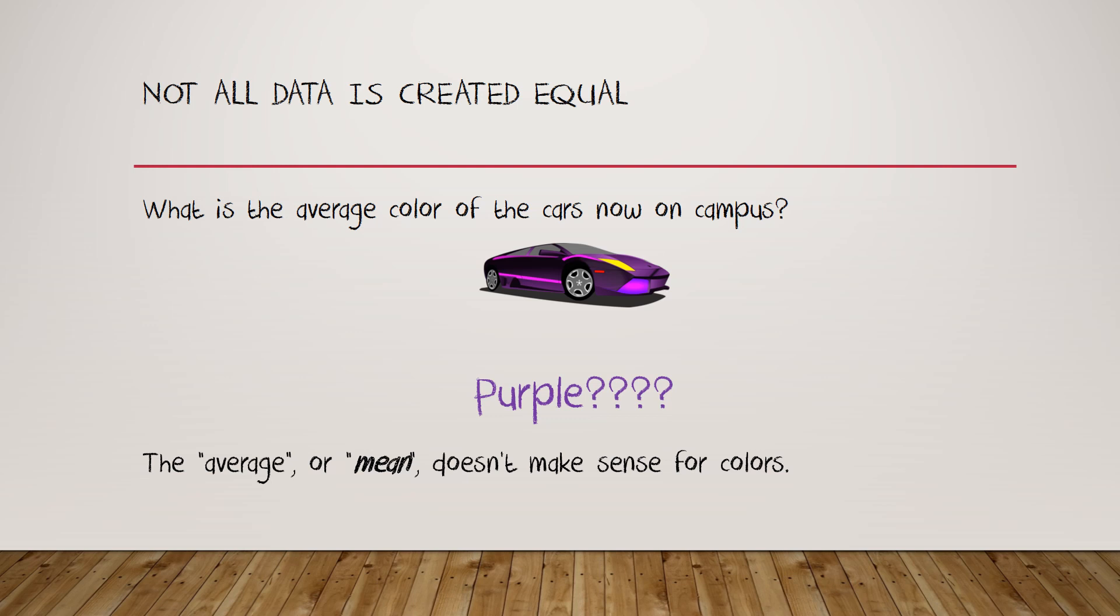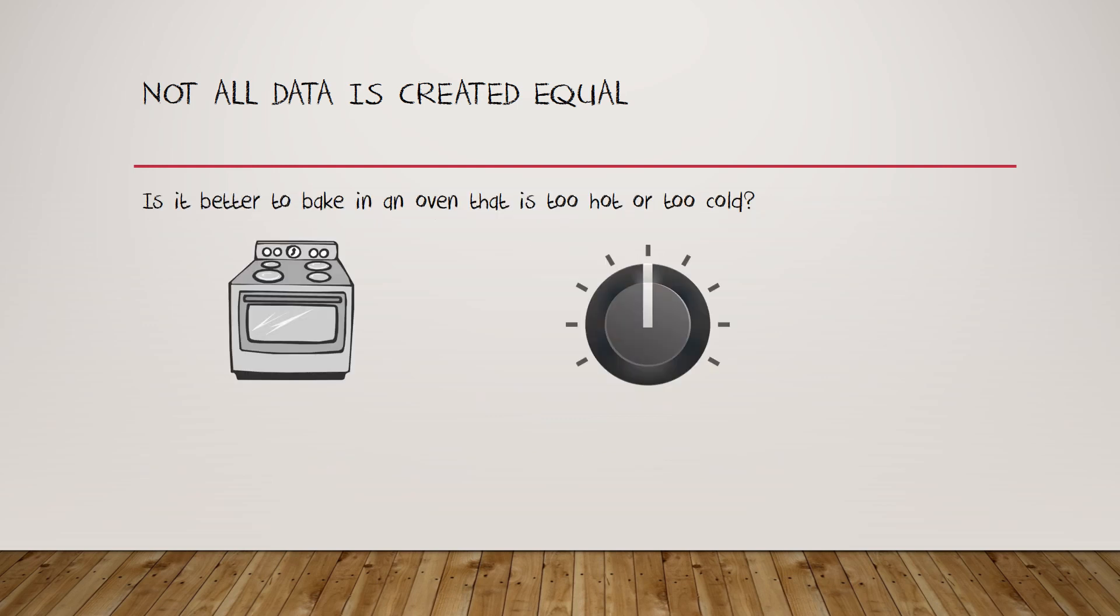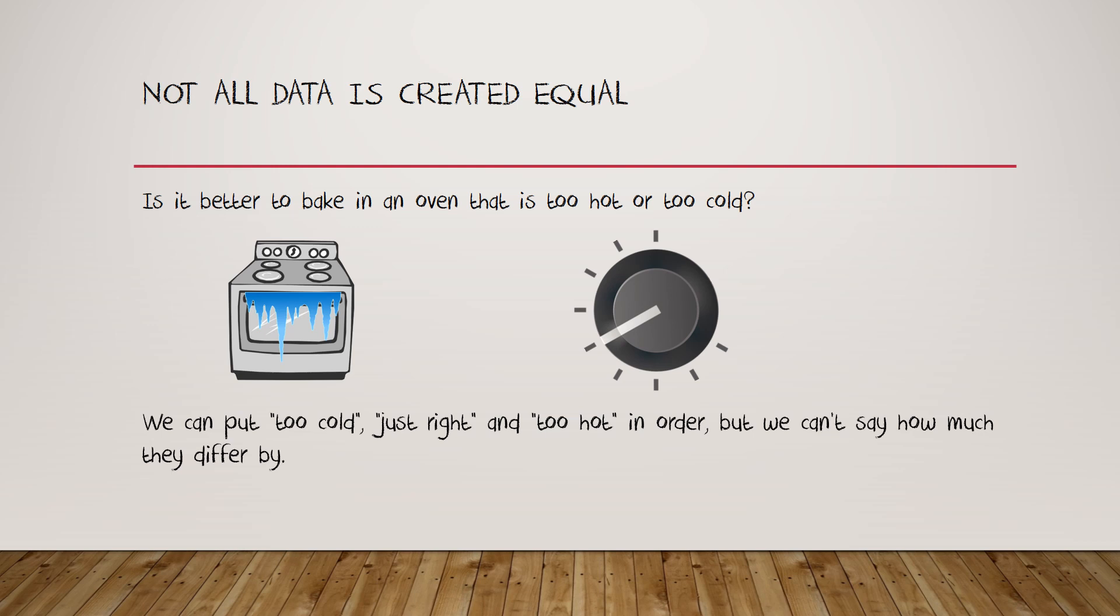We can add a little bit more structure to this kind of data by requiring that the various categories fall in some sort of natural order. For example, is it better to bake in an oven that's too hot or too cold? Well the answer to that question kind of depends, doesn't it? I mean there's a little too hot and then there's a lot too hot. We can take those three categories of too hot, too cold, and just right and put them in order, but we can't say how much they differ by. We have more structure but not that much.